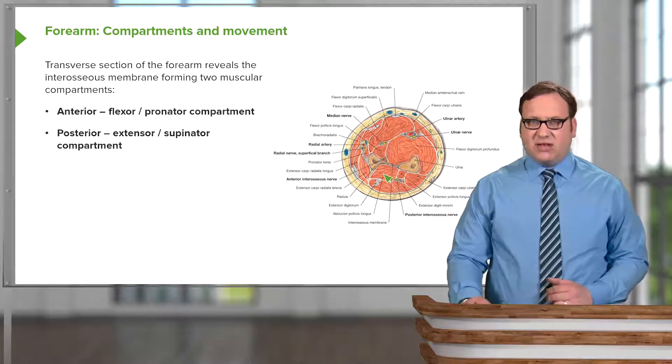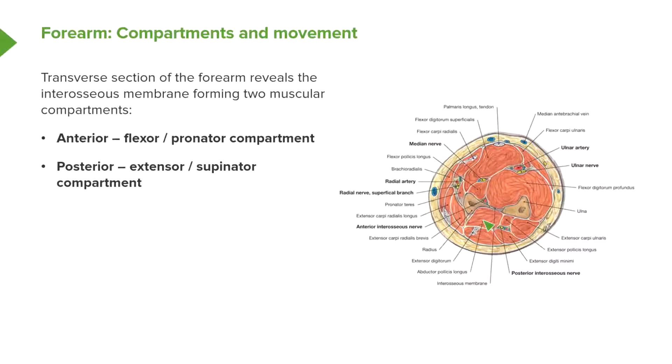Remember, this is the inferior view, and this is a right forearm. So we're looking at it from below. We can see laterally, we have the radius, and medially, we have the ulna. These two bones are connected from their interosseous borders via the interosseous membrane.